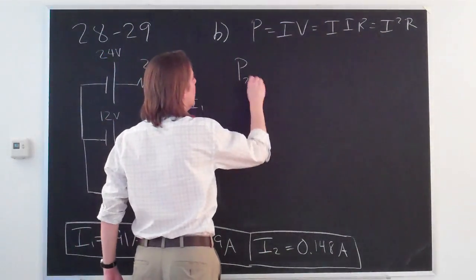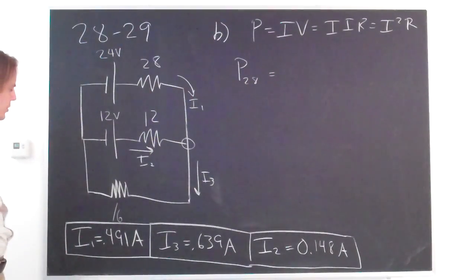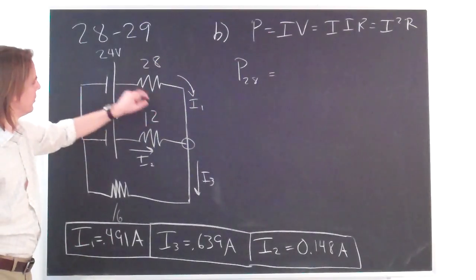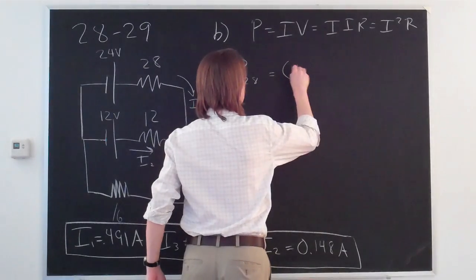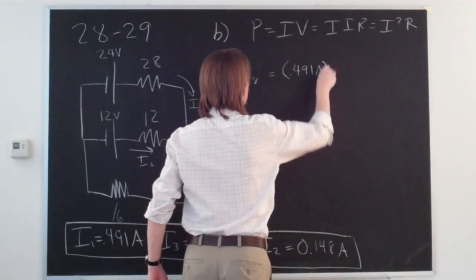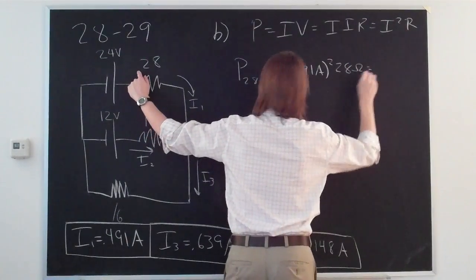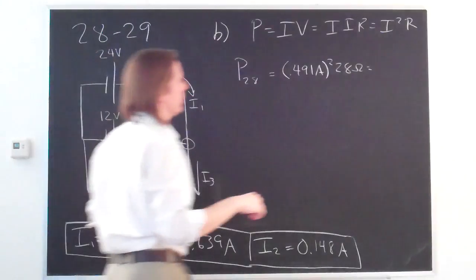We just now plug and chug. So we've got to get these right. So this is I1 in the 28 ohm resistor. So it's 0.491 amps squared times 28 ohms, which is, if you slap that in your calculator, 6.75 watts.